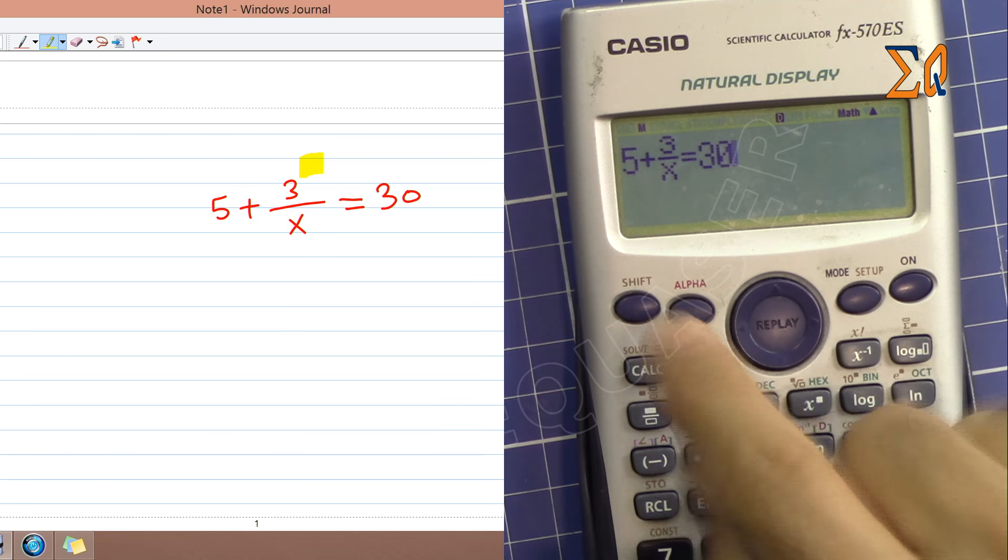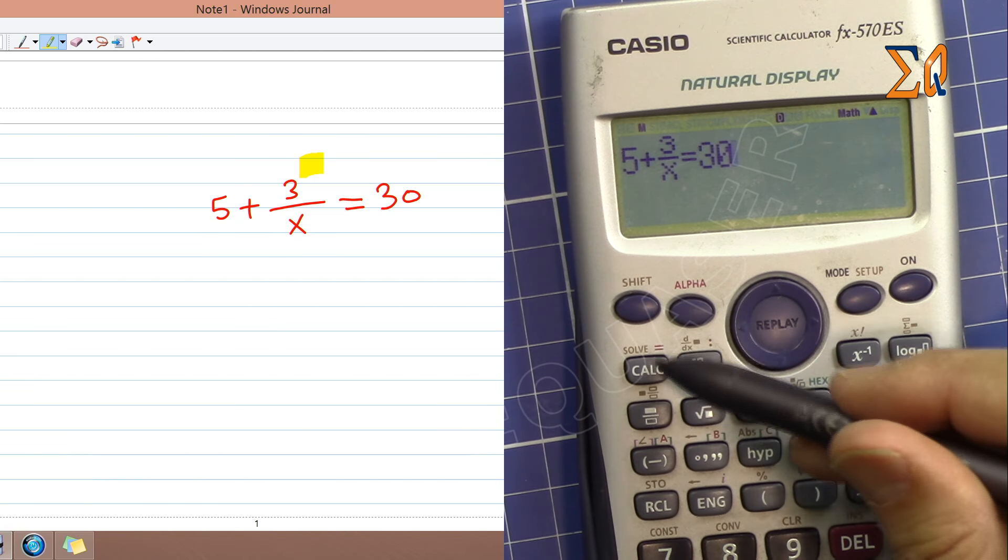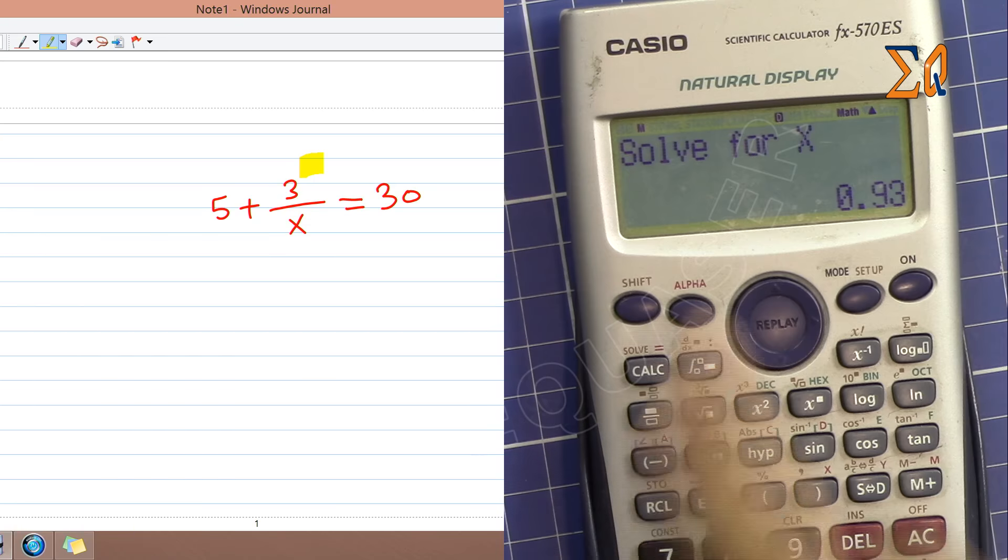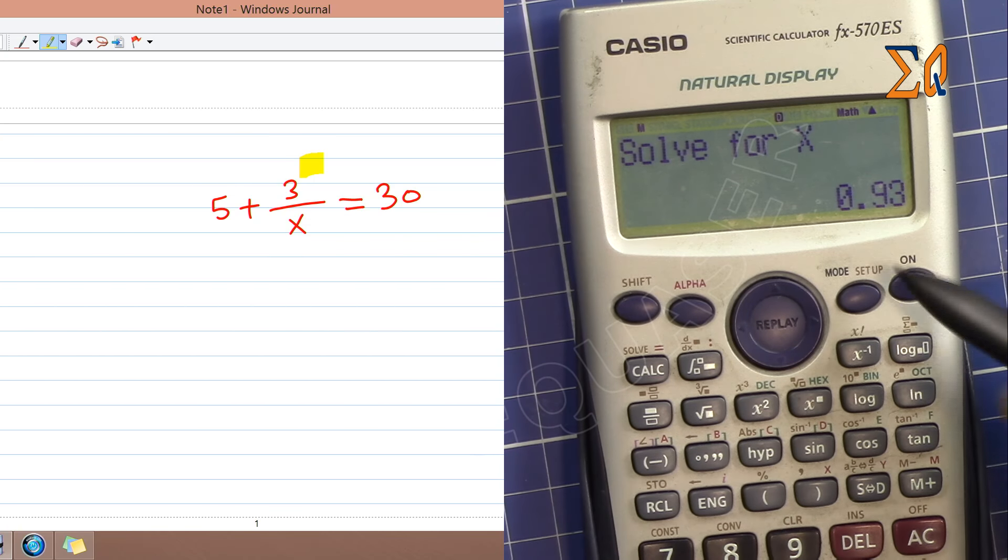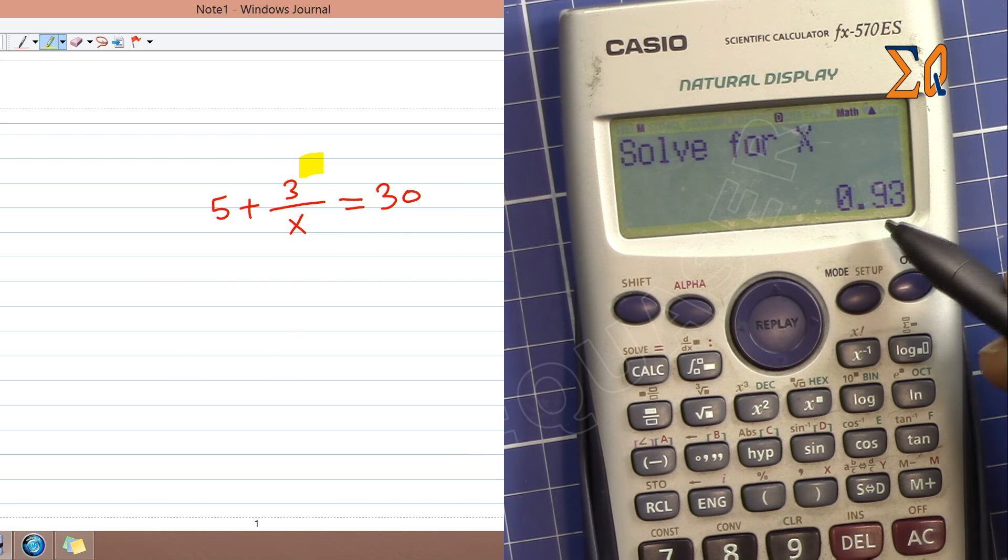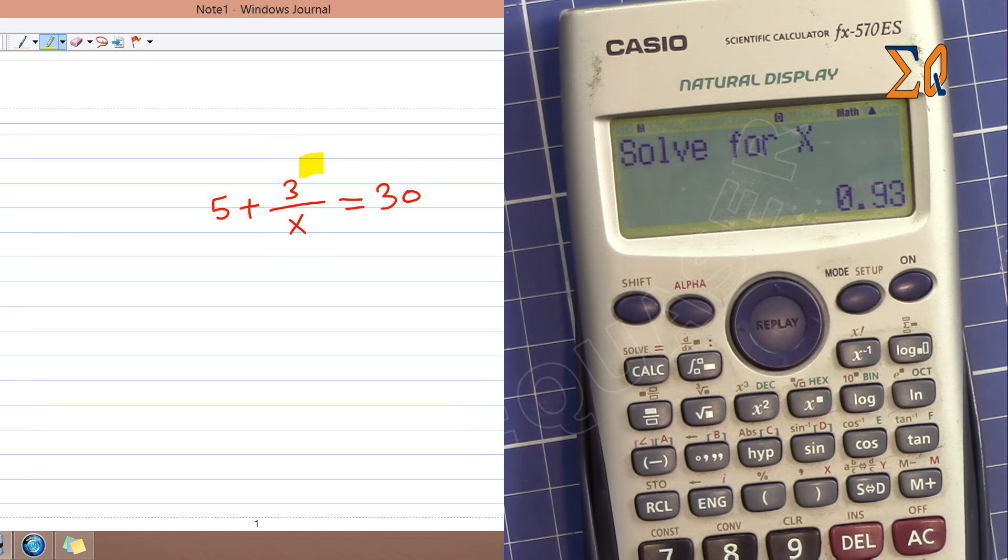So we press SHIFT and solve. Solve is this button. Now it says solve for x. This value is the previous value in the memory, so don't worry about it, just press equal sign.